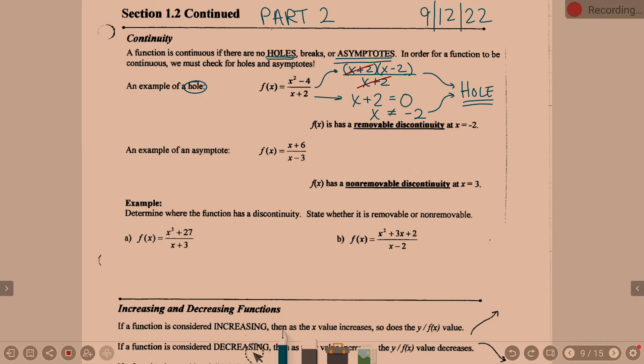Now, you'll notice to get the hole, we set our denominator equal to 0. And so, and that's what we're going to be doing with all these, is denominator equal to 0.